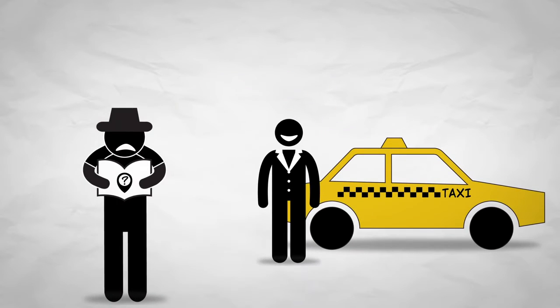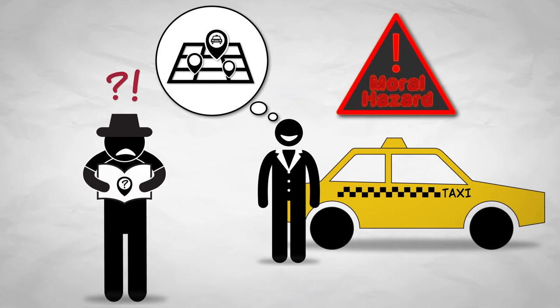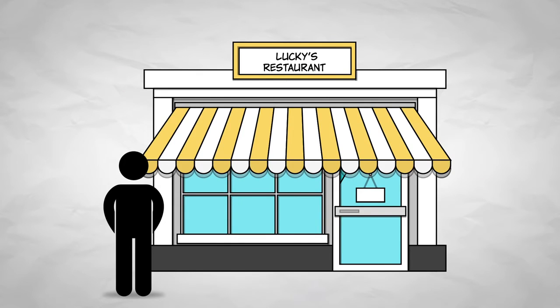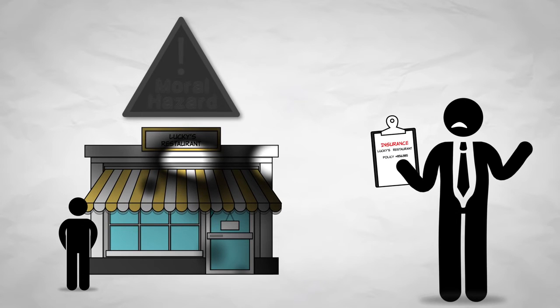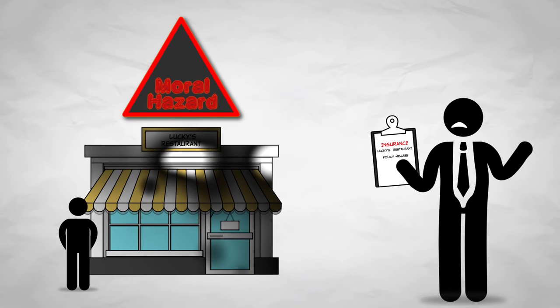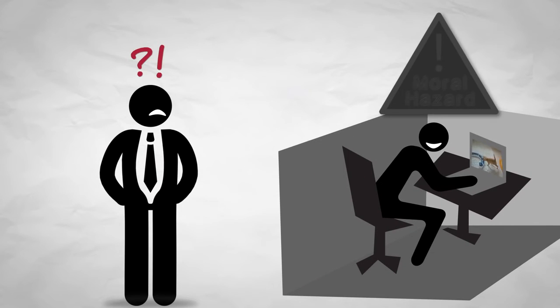The car repair problem is just one example of asymmetric information and moral hazard. A taxi driver has more information about the roads than does a tourist — he may take a longer route in order to get a higher fare. A restaurant owner knows more about the safety of his restaurant than does his insurance company; he might choose to skimp on sprinklers if he's got fire insurance. An employee knows what he's been working on all day, whereas the manager maybe does not, and the employee might choose to goof off rather than do his job.